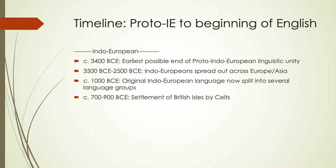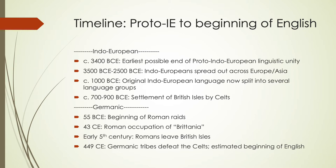Around that time we see the period of language known as Germanic take place. Germanic as a proto language would have happened several hundred years before we really have a lot of documentation of it. Around 55 BCE is when the Roman raids began and the occupation of Britannia. In the early fifth century, the Romans left the British Isles, and by 449 the Germanic tribes had come in, defeated the Celts, moved them off to the edges of the Isles. This is seen as the beginning of English.